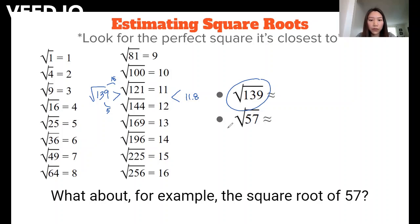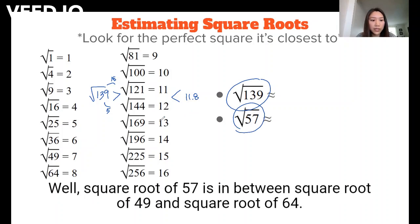What about, for example, the square root of 57? Well, square root of 57 is in between square root of 49 and square root of 64. So we know that the value of that is going to be somewhere in between 7 and 8.